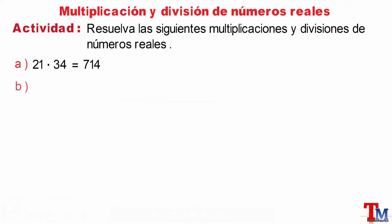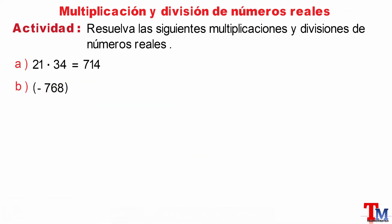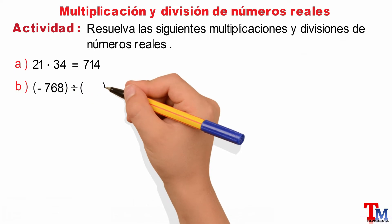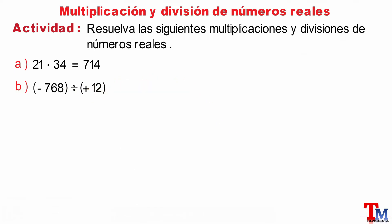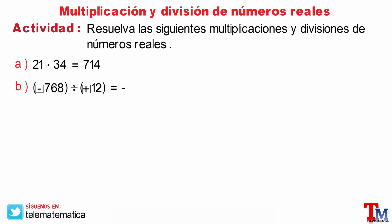Literal B: minus 768 divided by 12. In this next case, we have the division of whole numbers. Applying the law of signs, the result will be negative, and dividing the numbers as natural numbers, the result is minus 64.